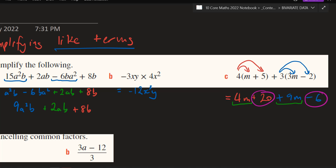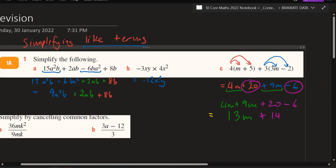Put the like terms together. I can see the like terms here are 4m and positive 9m, and then positive 20 and negative 6. So you've got 4m plus 9m, and 20 take away 6. The colours show which ones are like terms — remember, like terms have the same exact symbols. So 4m plus 9m is 13m, and 20 take away 6 is 14. Positive 14, not negative 14. If you can do all that, that's literally all of chapter 1a.